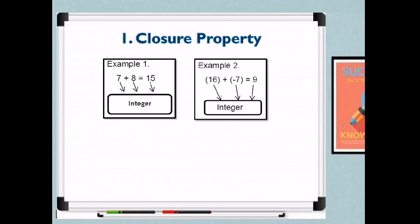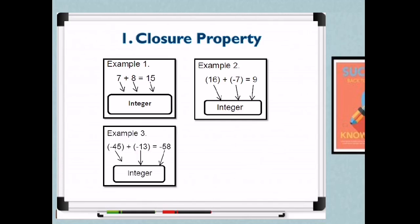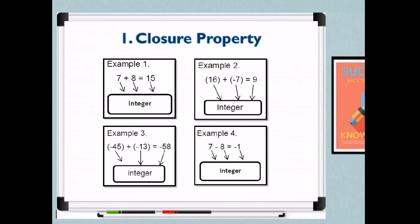Another example: positive 16 plus negative 7 — both are integers and the answer is also an integer. Adding both negatives, the answer is a negative integer, which is still an integer. For the last example, 7 minus 8 — the answer is also an integer. That is closure property.